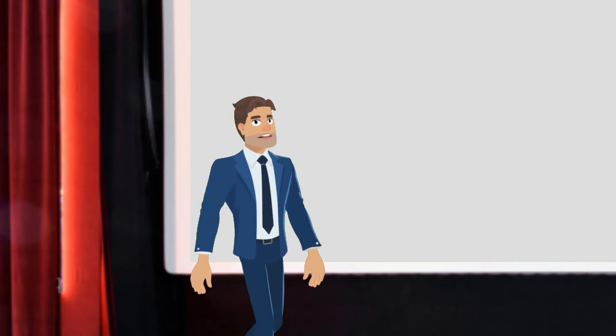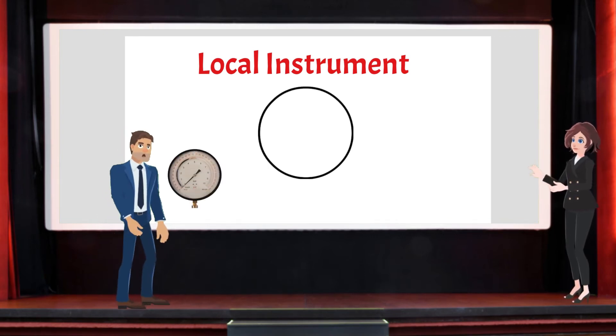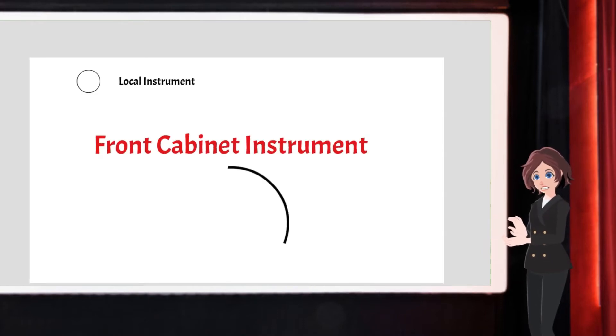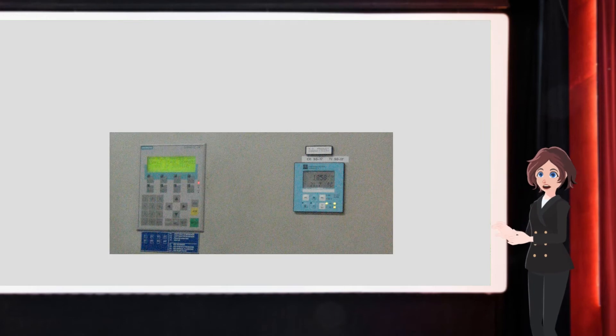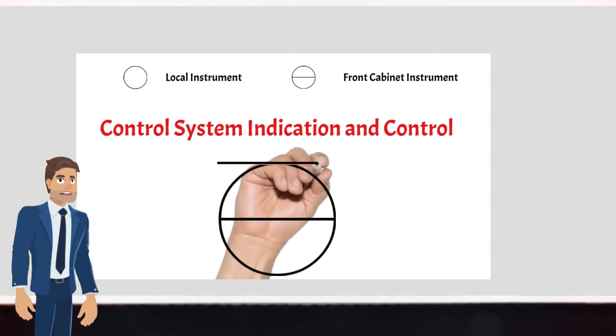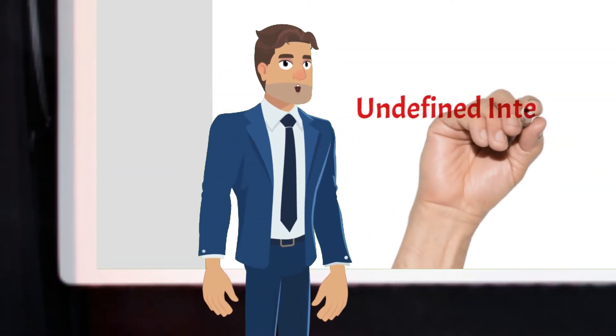How can instruments be identified on the P&ID? There are multiple graphic symbols related to instrumentation; in this video we will analyze the four main symbols. First, the local instrument, represented by a circle — all instruments installed in the field are local instruments, for example a pressure gauge, a temperature indicator, or any kind of transmitter. Second, the control cabinet instrument on front, represented by a circle divided in two by a continuous horizontal line; if the line is dashed, the instrument is installed inside the cabinet. Third, the monitor or HMI control panel indication (software indication), represented by a circle inscribed in a square divided by a horizontal continuous line. Fourth, the indefinite interlock, represented by a square rotated 45 degrees.